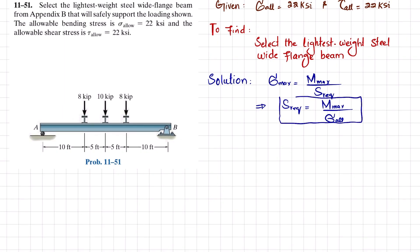Looking at the beam with the given loading: if you remove the support at point A, you get reaction force Ra, and removing the support at point B gives reaction force Rb. We will find Ra and Rb using the equations of equilibrium.